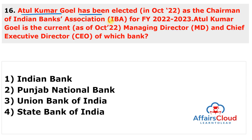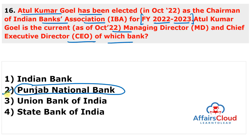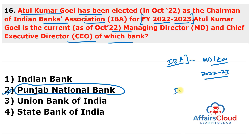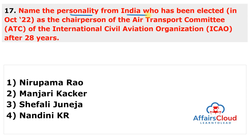Next question: Atul Kumar Goel was elected as Chairperson of the Indian Banks' Association for 2022-23. He is the current MD and CEO of which bank? He is the MD and CEO of Punjab National Bank. The managing committee of the Indian Banking Association re-elected Atul Kumar Goel, MD and CEO of Punjab National Bank, as its new chairman for 2022-23. Atul Kumar Goel was previously elected to the IBA managing committee to serve as chairman in 2021.